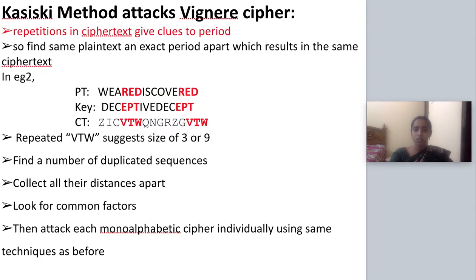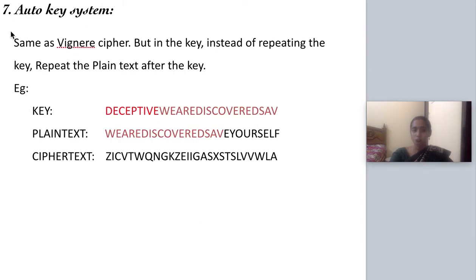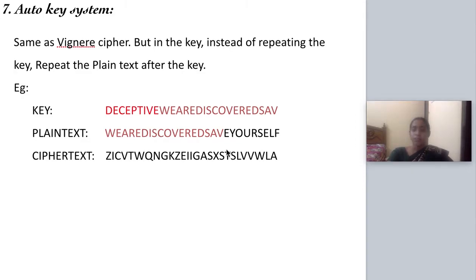To overcome this cryptanalysis method, the next system is the auto key system. In the auto key system you follow the same Vigenère cipher procedure, but the key is written only once. Instead of repeating the key, the plain text itself is appended after the key. For example, with plain text 'we are discovered save yourself' and key 'deceptive', once the key runs out you continue with the plain text V, W, E, A, R, E, D, I, S, C, O, V, E, R, E, D... until the key stream matches the plain text length. Then the normal Vigenère cipher method is applied. This is the auto key system.